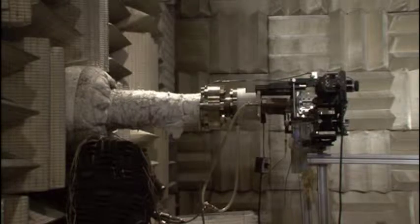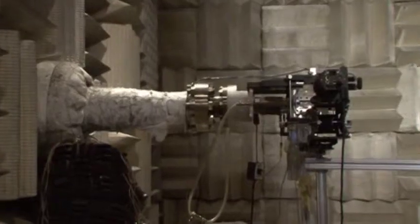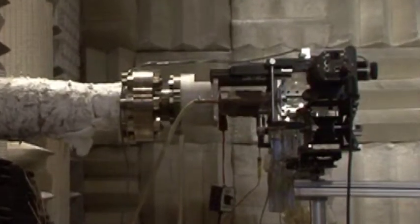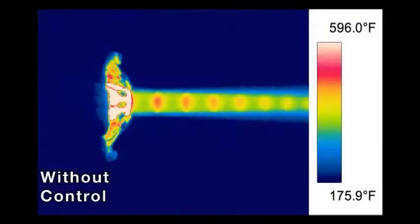Microjets, a type of actuator, are placed at the engine's nozzle. Water, nitrogen, or air is injected into the exhaust flow. This results in a significant reduction of up to 7 decibels at the peak radiation direction.